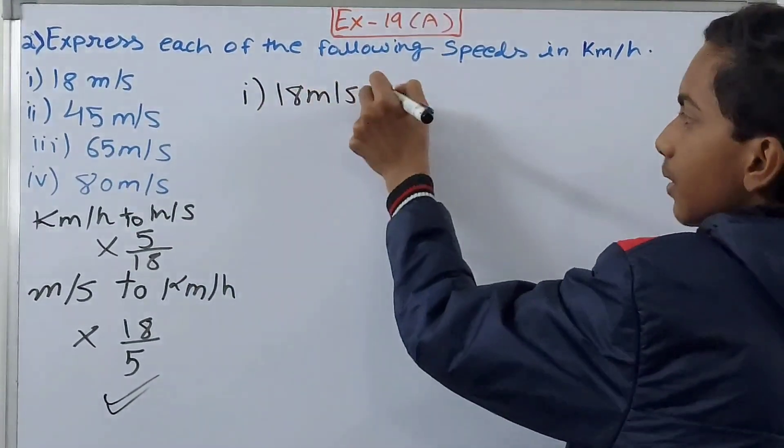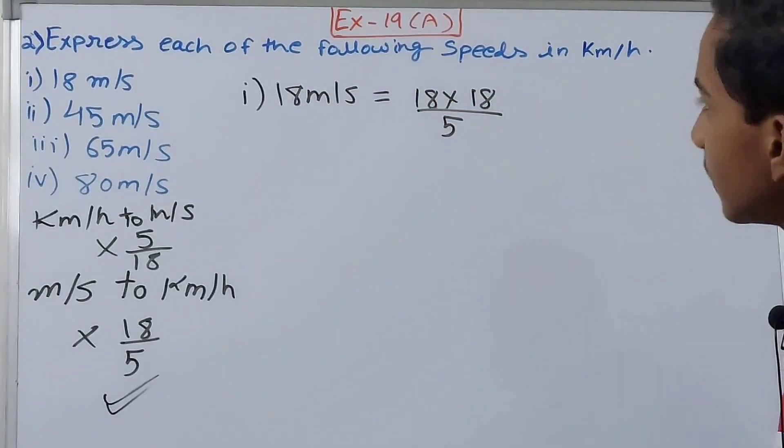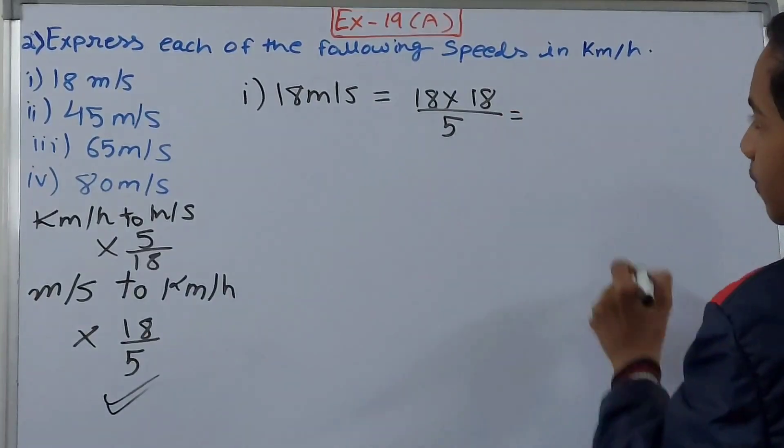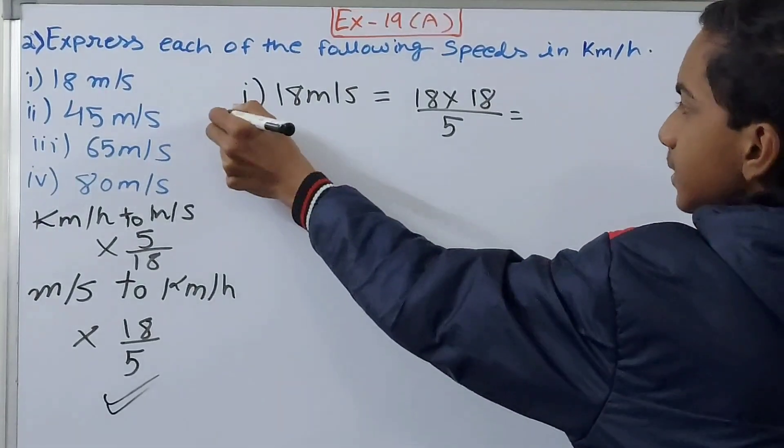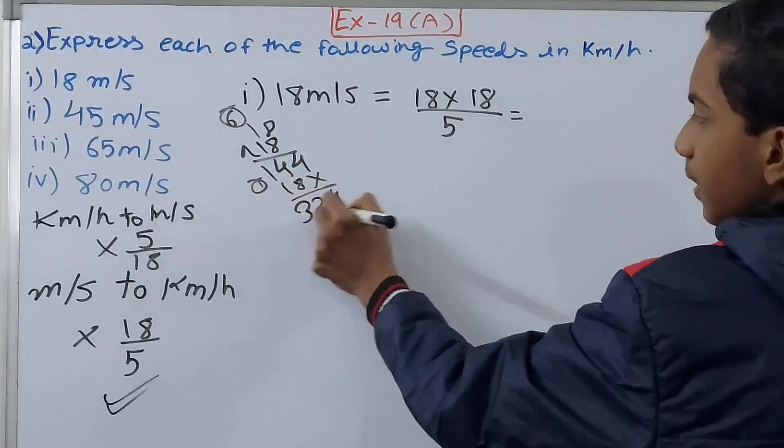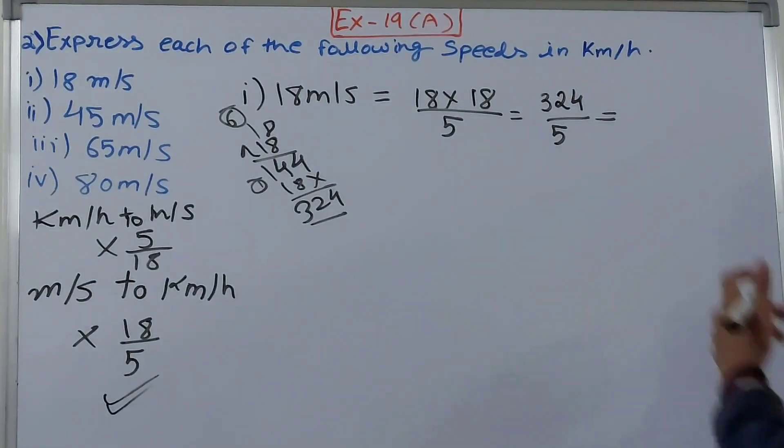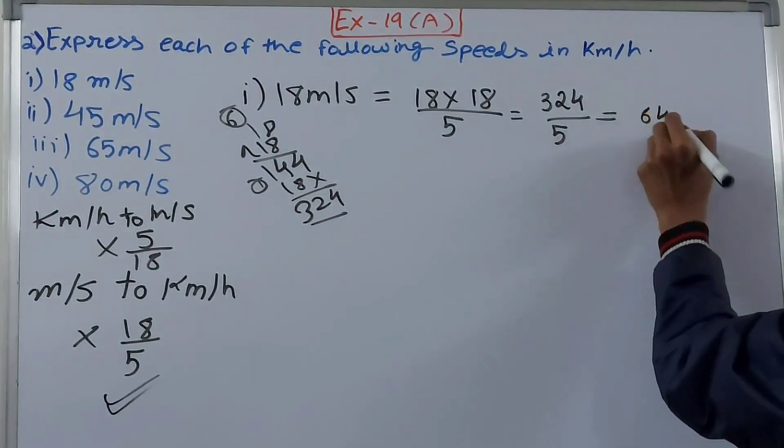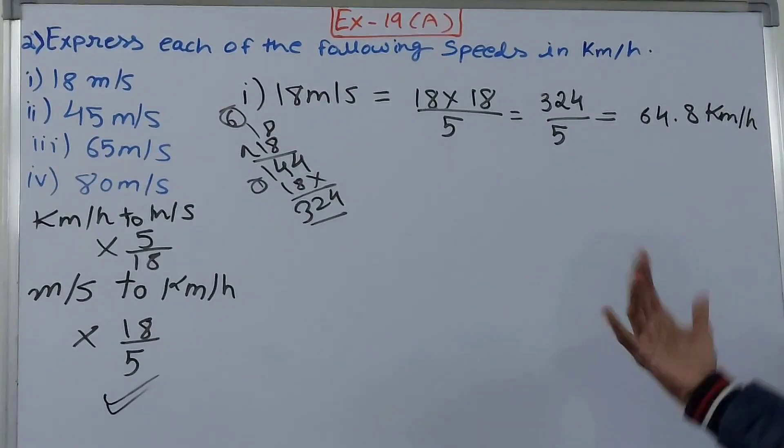So 18 × 18/5. 18 × 18 becomes 324, so 324/5. Dividing: 5 goes into 32 six times with remainder 4, giving us 64.8 kilometers per hour as the speed for the first part.